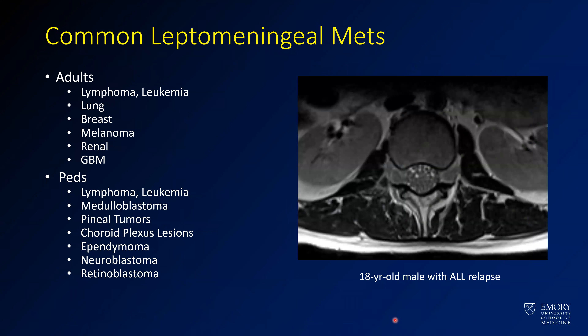When looking at metastatic disease, common conditions to think about are lung or breast cancer and melanoma. GBM metastases are more rare. In pediatric patients, the differential is a little different — think more about lymphoma, leukemia, brain tumors like medulloblastoma, and pineal tumors.